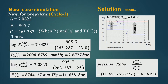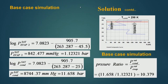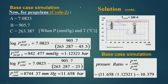The condenser is operating at 11.658 bar and the level 1 evaporator is operating at 2.6727 bar. From this pressure to that pressure, the vapor has to be compressed. Similarly, for cycle 2, the evaporator is operating at 1.12321 bar because cycle 2 is operating at a much lower temperature, so its pressure has to be lower.